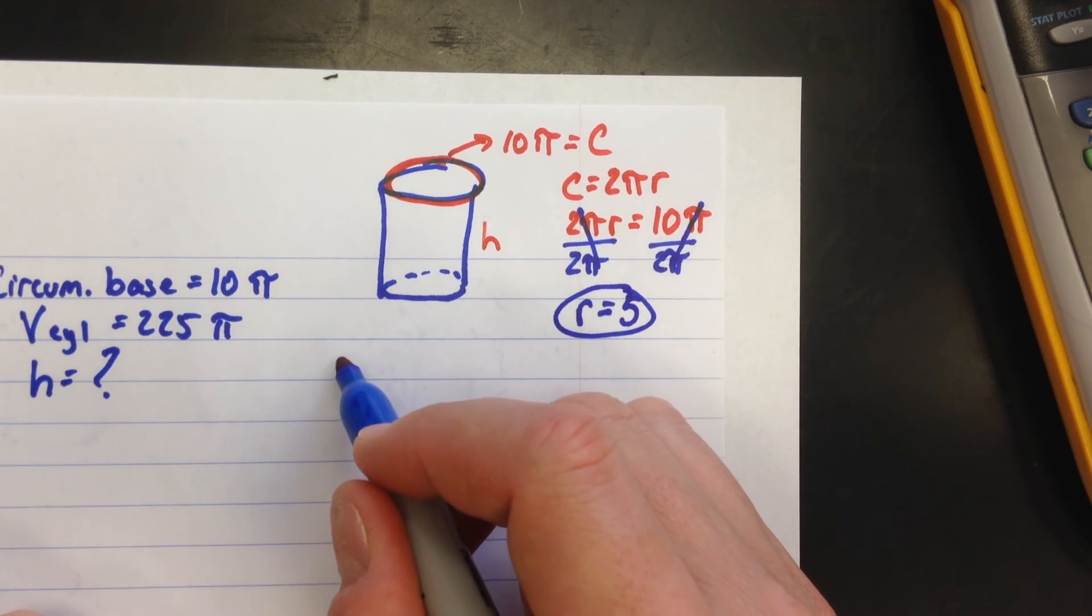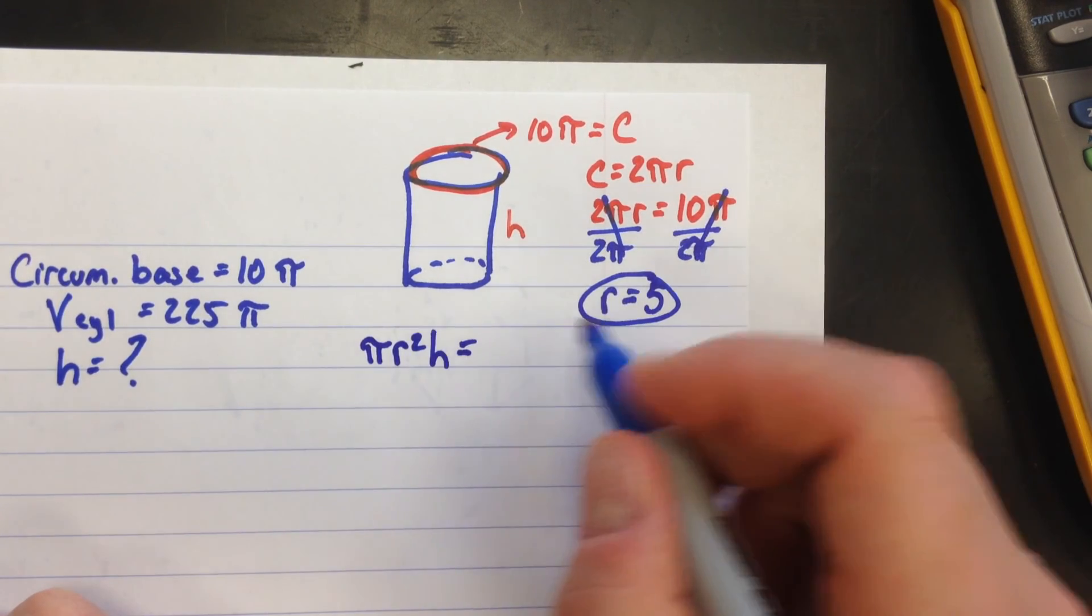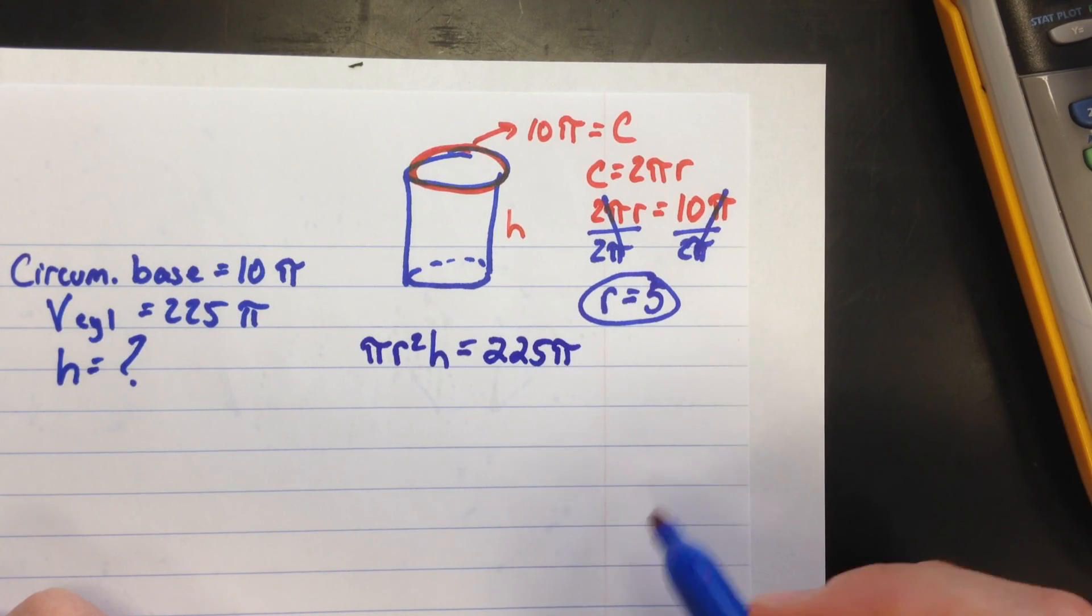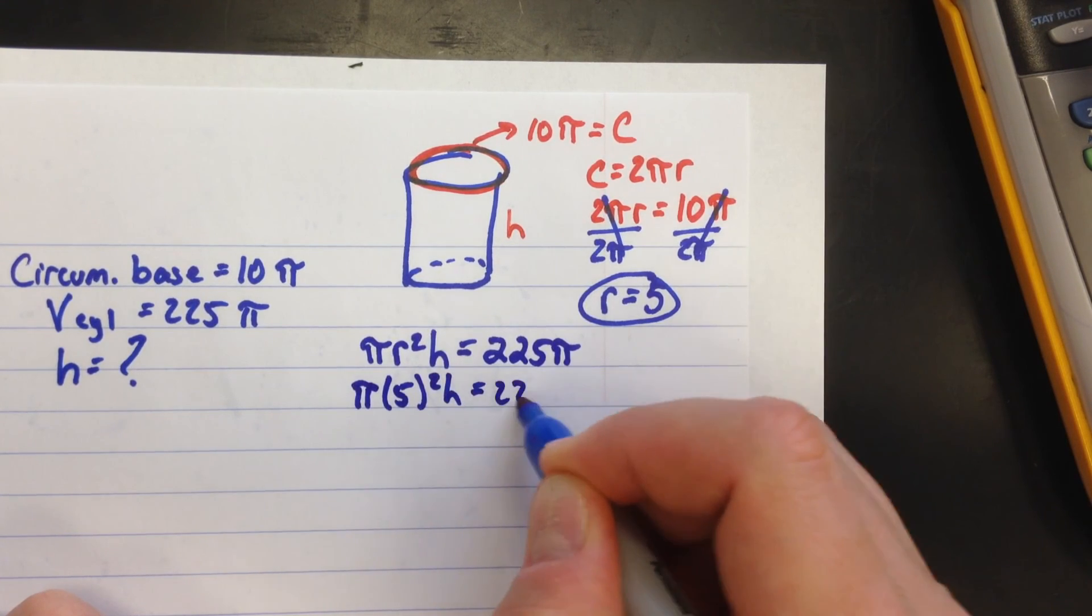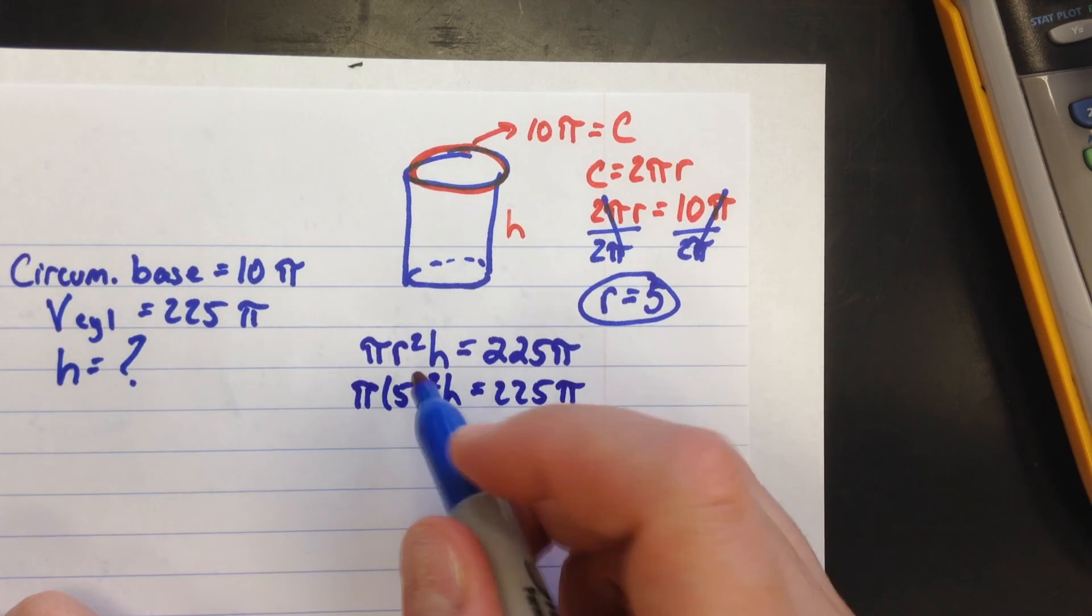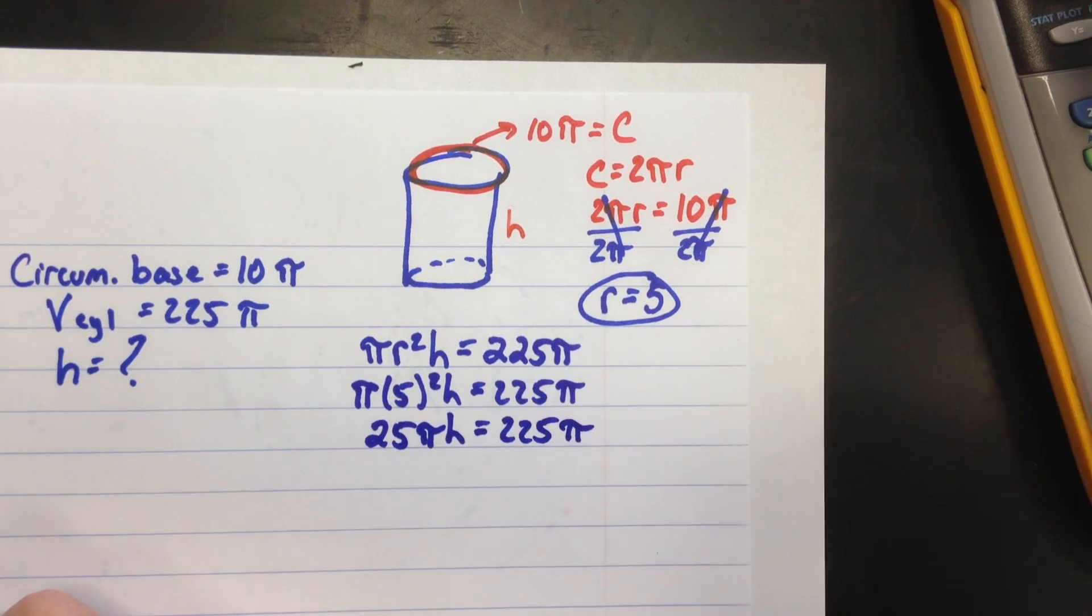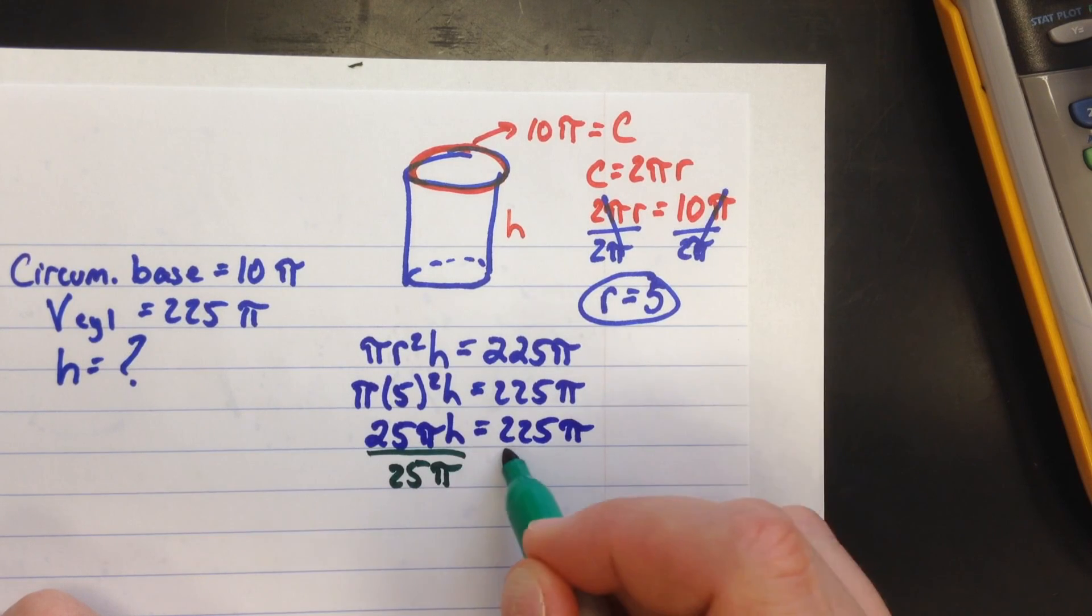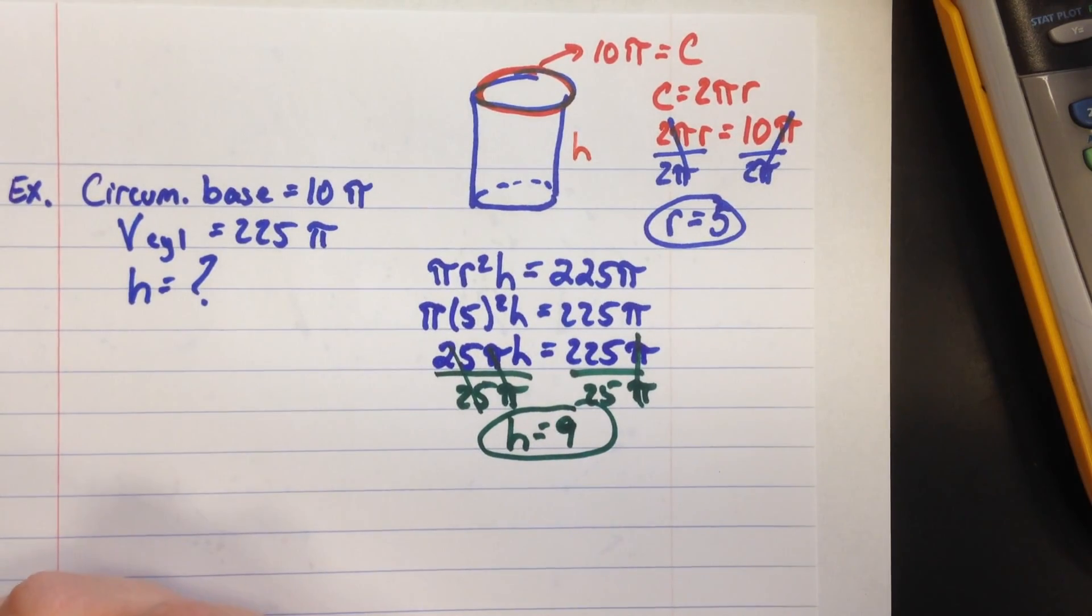Now we can use that because volume is πr²h. And they tell us that the volume of the cylinder is 225π. Let's put the 5 in for the radius. 5² is 25. So I'm going to write this as 25πh times h equals 225π. We're solving for the height. This is 25π times the height, so to undo that, let's divide by 25π. You get h equals—the π's reduce to 1, they cancel. 225 divided by 25 is 9. And that is your solution. That's the end of the notes.